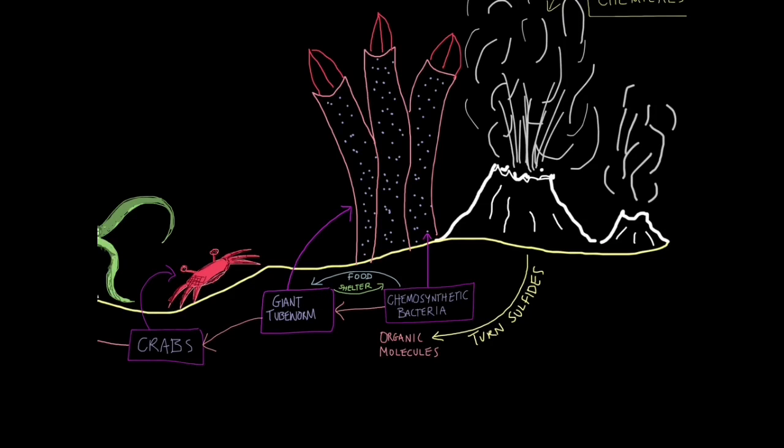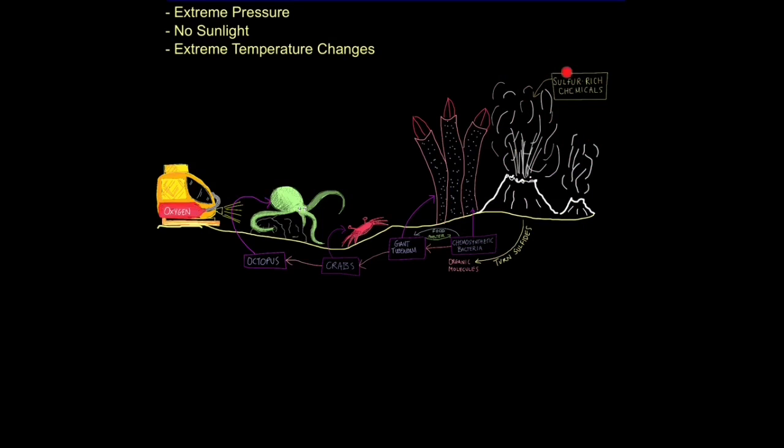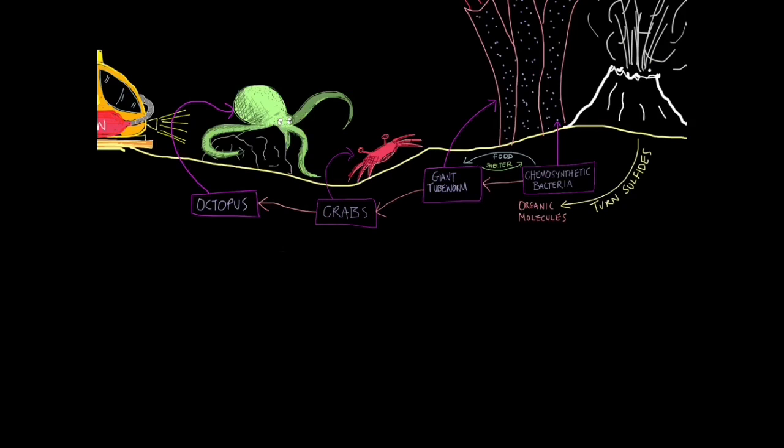So the producers in this food chain are the chemosynthetic bacteria. The primary consumers are the giant tube worms. And then the food chain becomes more recognisable. The secondary consumer is a crab, for example, and the tertiary consumer is an octopus which feeds off the crab. So that is how life can sustain itself without energy from sunlight. Remember this food chain as you may need to recall it for a six mark question at the end of an exam.